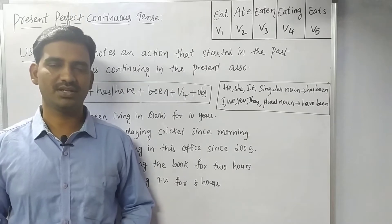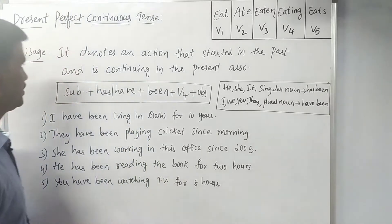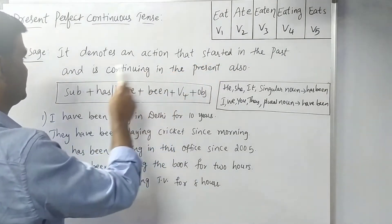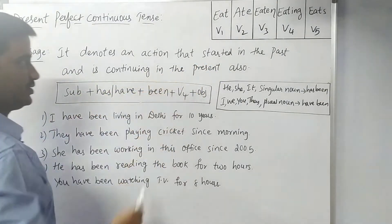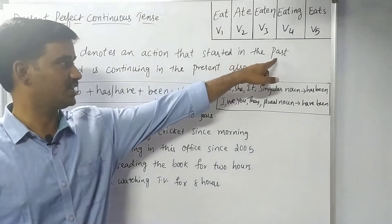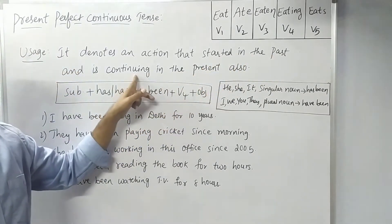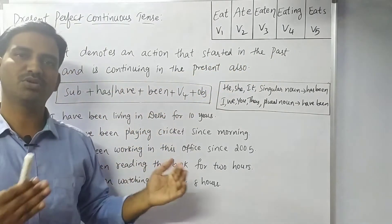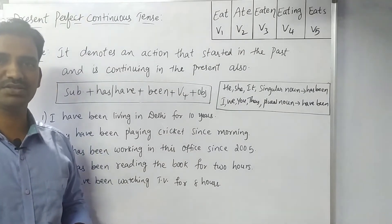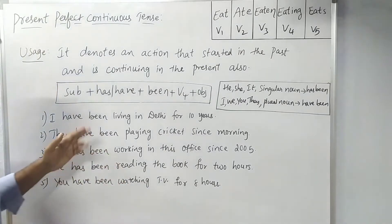Present Perfect Continuous Tense. Usage: it denotes an action that started in the past and is continuing in the present. The action always starts in the past and is also continuing in the present. We call it Present Perfect Continuous Tense.